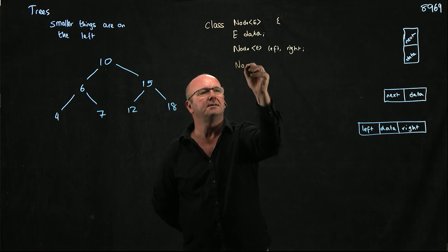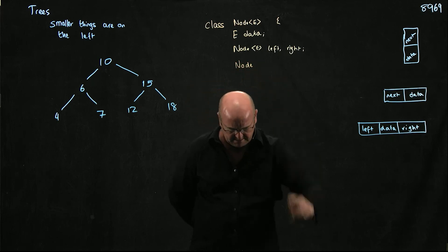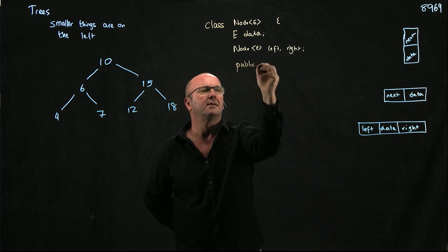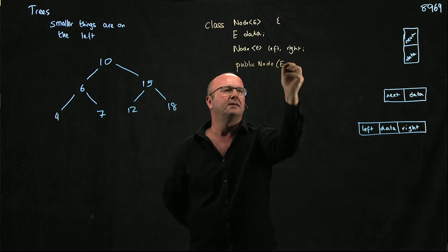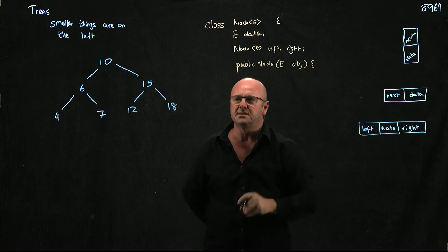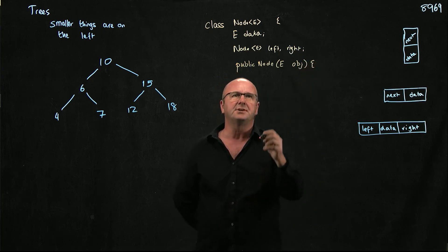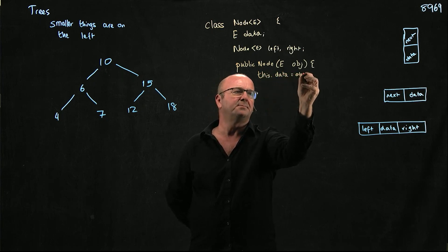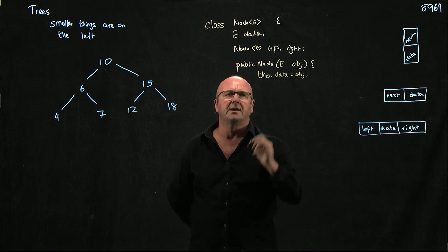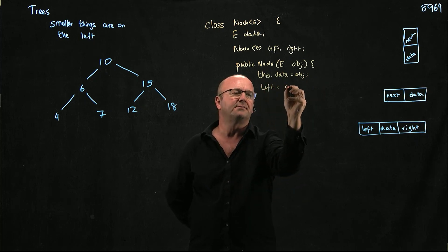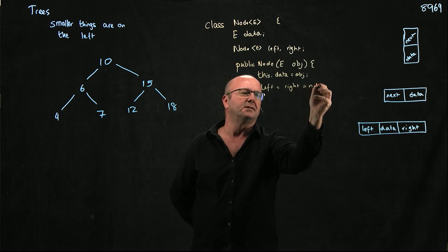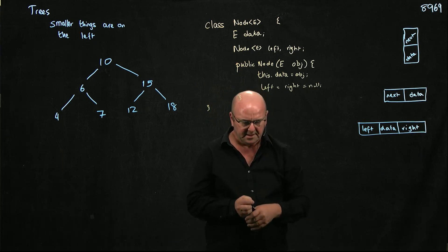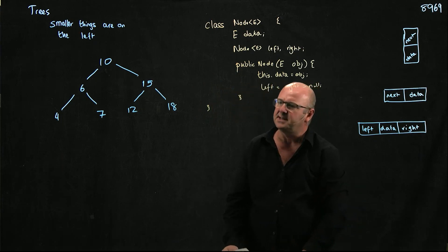So we've got our data, we have our constructor. We take an object — whatever they want stored in our tree. This.data is equal to object, and left is equal to right is equal to null. And that's our node class — very analogous to the node class we've seen in the linked list.